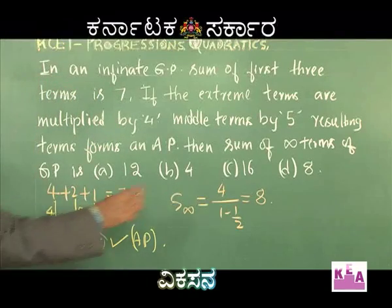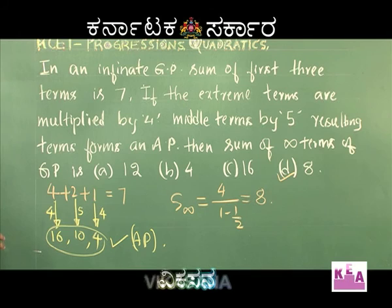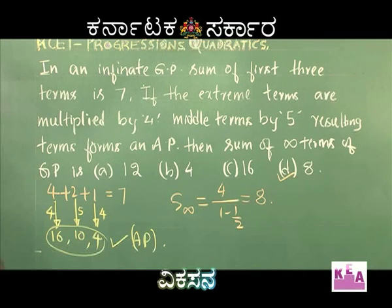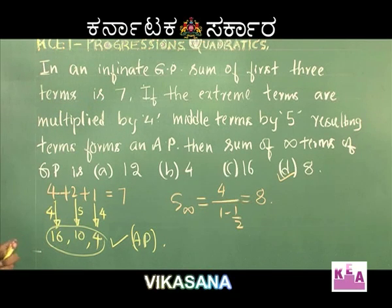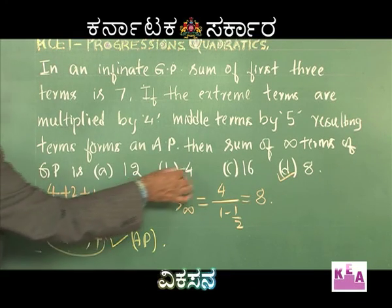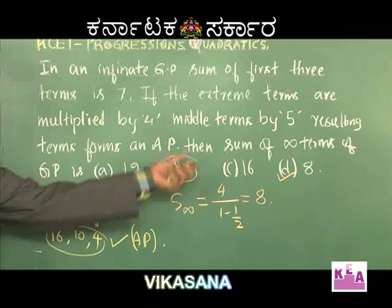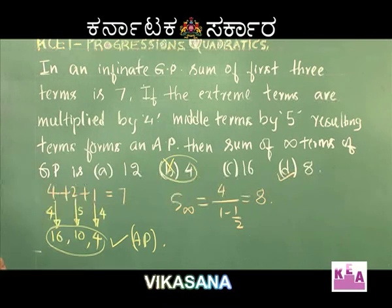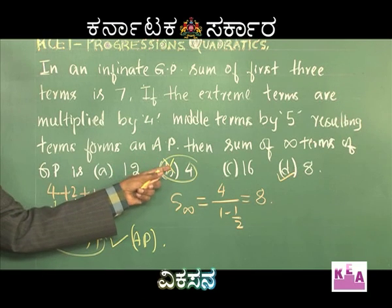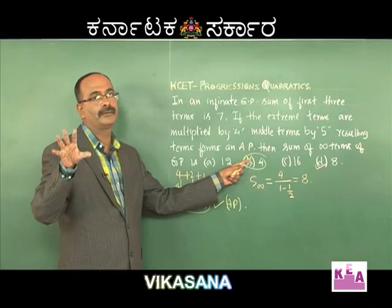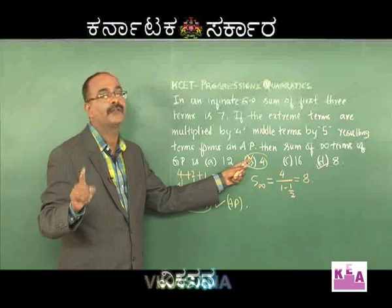If you don't know this logic, here's another approach. Since the sum of the first 3 terms itself is 7, option B (4) is immediately ruled out. Among the remaining options 12, 16, and 8, the first 3 terms are the major contributor to the infinite GP sum, which helps narrow it down. Please make a note of this.